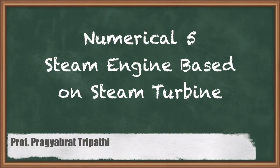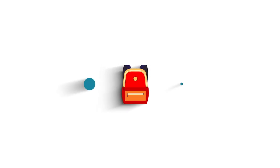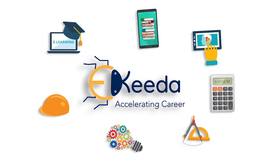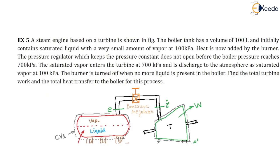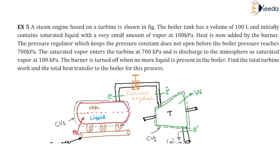In this video we will learn one of the best examples with combinations of two control volumes. A steam engine based on a turbine is shown in the figure. The boiler tank has a volume of 100 liters and initially contains saturated liquid with a very small amount of vapor. The boiler pressure is 100 kilopascal. Heat is supplied to the boiler with the help of a burner.